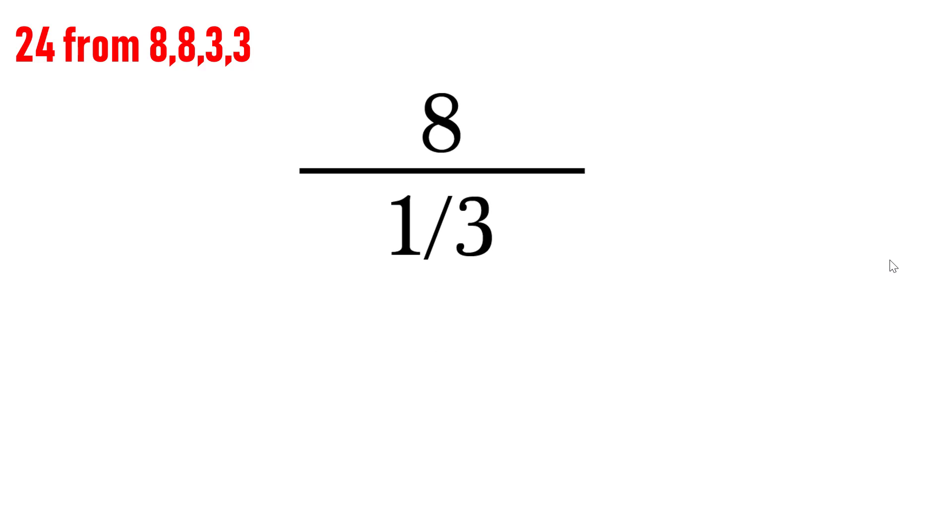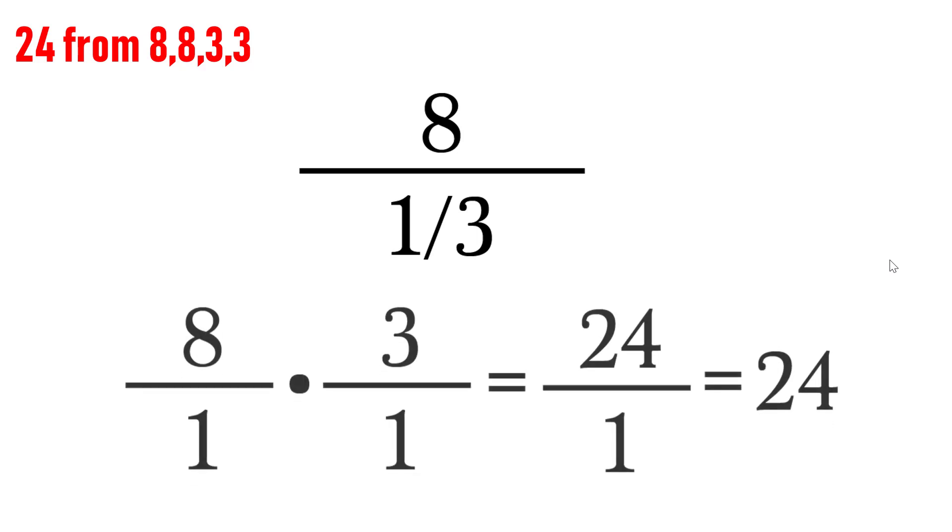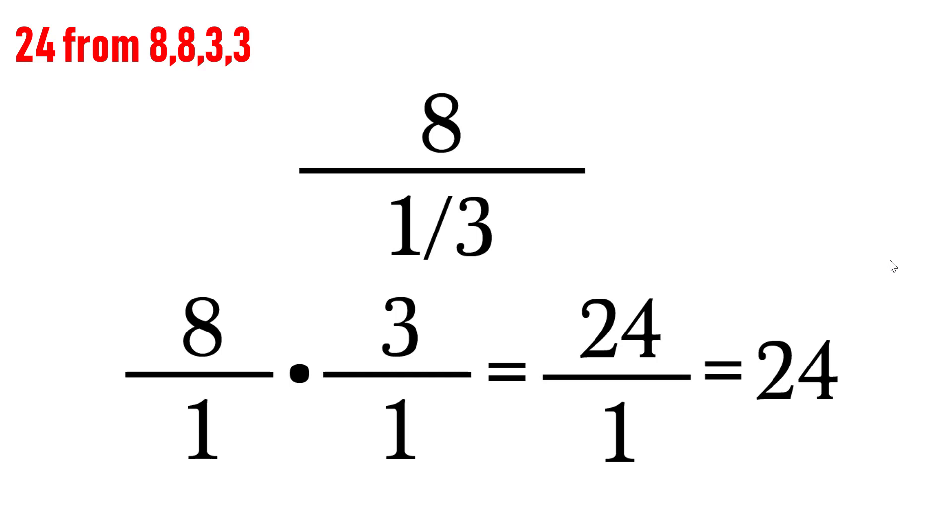What helps the most in solving this problem was realizing that 8 divided by 1/3 equals 24. Then all we need is to figure out how to use the remaining 8, 3, and 3 to obtain 1/3 since one 8 is already used in the numerator. So, this is a much simpler task.